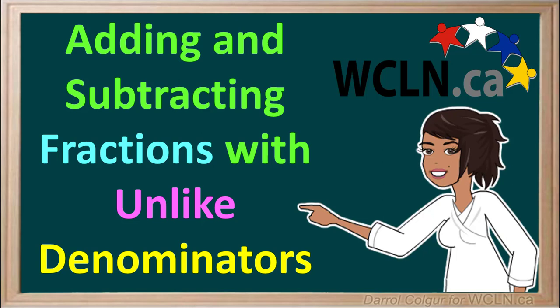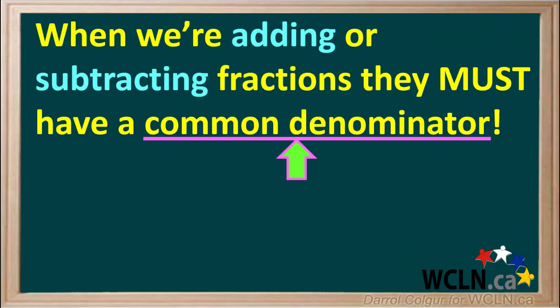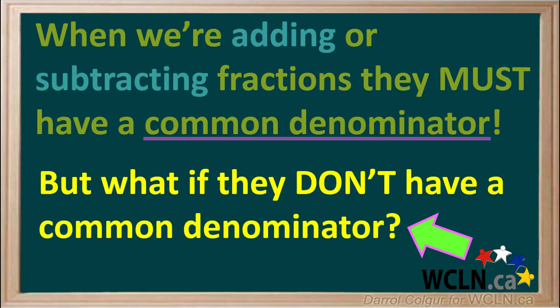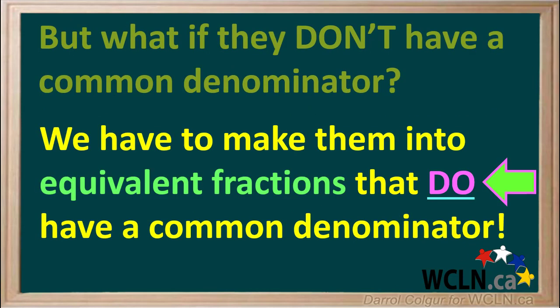Adding and Subtracting Fractions with Unlike Denominators. Remember that whenever we're adding or subtracting fractions, they must have a common denominator. But what if we're trying to add or subtract fractions that don't have a common denominator? In that case, we must make fractions into equivalent fractions that do have a common denominator. Then we can add or subtract them. Let's see how this is done.